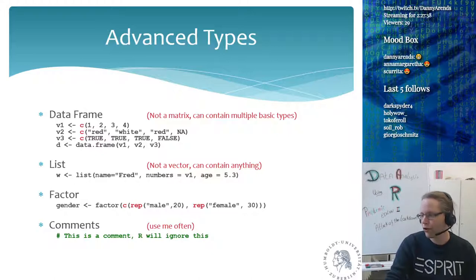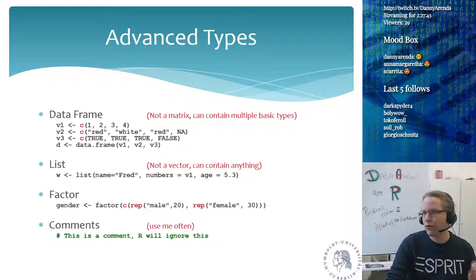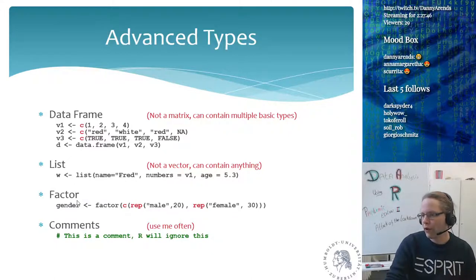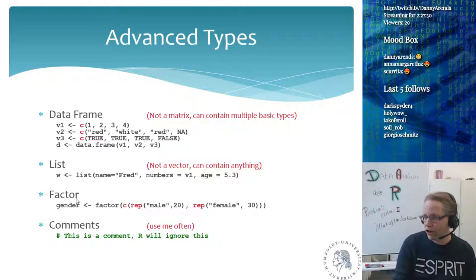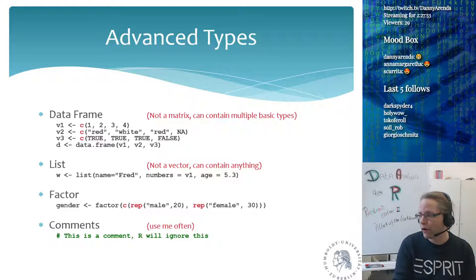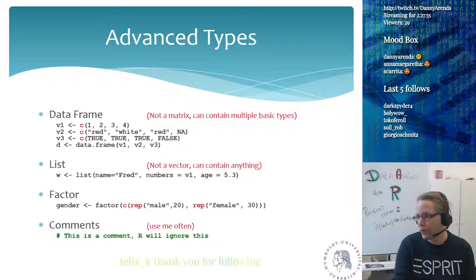Because R is based on statistics, it also has factors. Factors are categorical variables which have a certain number of levels. For example, gender is a categorical variable because you have males and you have females.